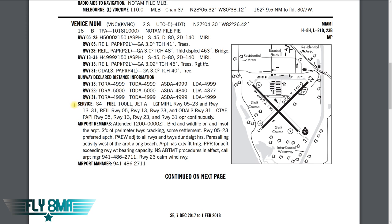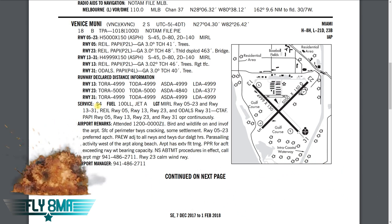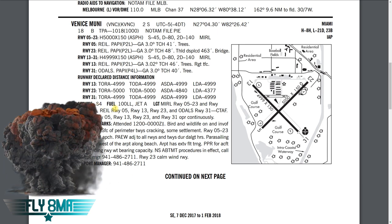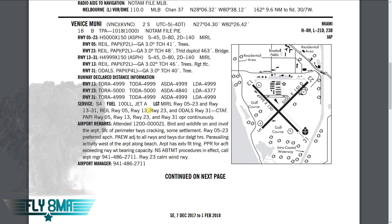Service: S4 means major airframe and powerplant repair is available. Fuel: 100 low lead and Jet-A are available at the airport. For lighting, medium intensity runway lights are on runway 5-23 and runway 13-31. REILs are on runways 5, 23, and ODALs on runway 31. PAPI lights are on runways 5, 13, 23, and 31, and they operate continuously.